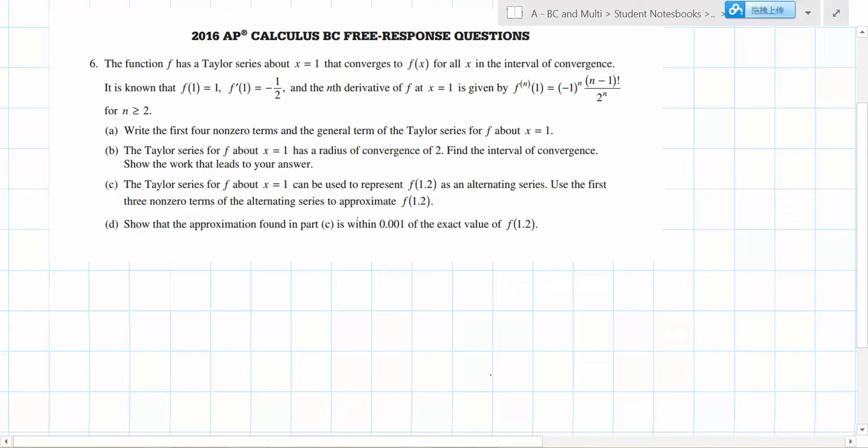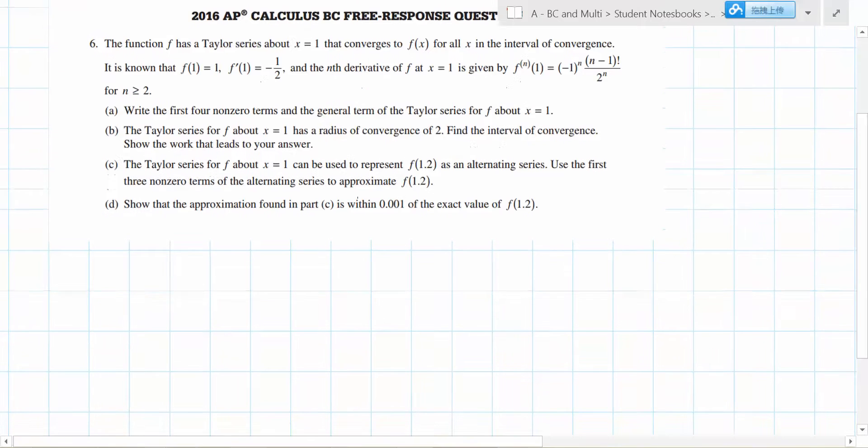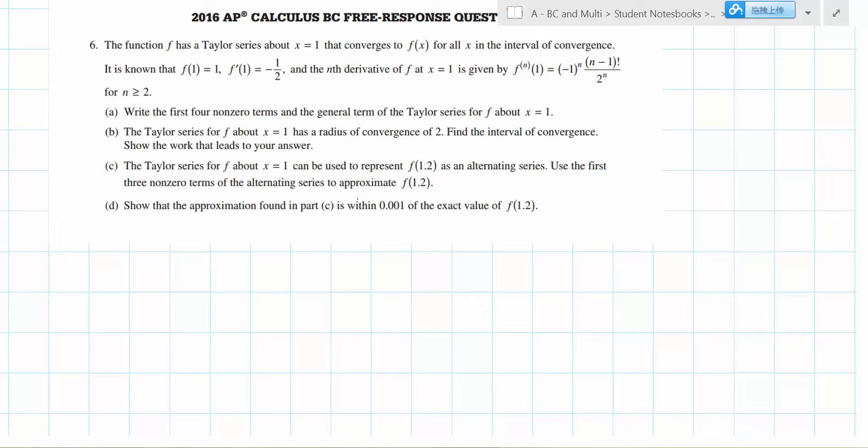Today I'm going to do free response question number 6 from the 2016 BC Calculus free response exam. The function f has a Taylor series about x equals 1 that converges to f(x) for all x in the interval of convergence.